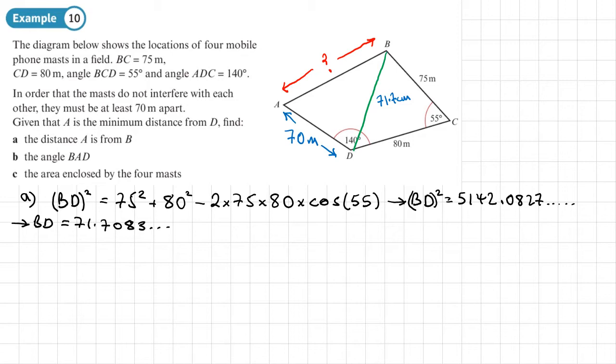So we'll just add that length to our diagram and we'll just write it as 71.7 for now. Our next step is we're going to calculate this angle here. Now when we've got this angle, we can do 140 minus that to get this. Then once we've got this angle and these two sides here, we can then find this length here.